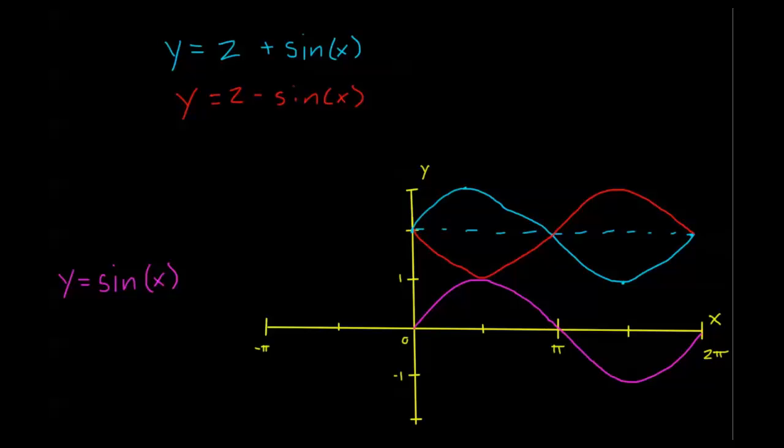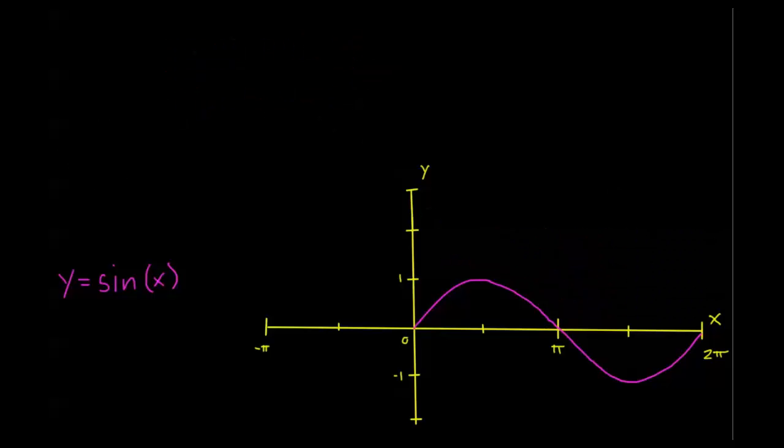Now the last one I wanted to talk about is stretching these functions. Let's just keep working with sine. We're already here. Now let's say that I had something like y equals 2 sine x. Now I'm just going to be multiplying all my values of sine by 2. So at x equals 0, I still have y equals 0. At x equals pi over 2, my sine is equal to 1, so 2 times sine is going to be equal to 2. 2 times 0 is 0, so I'm still at 0 at pi. 2 times negative 1 is negative 2, so that's where I am at 3 pi over 2. And at 2 pi, I'm still at 0. So this is my y equals 2 sine x.